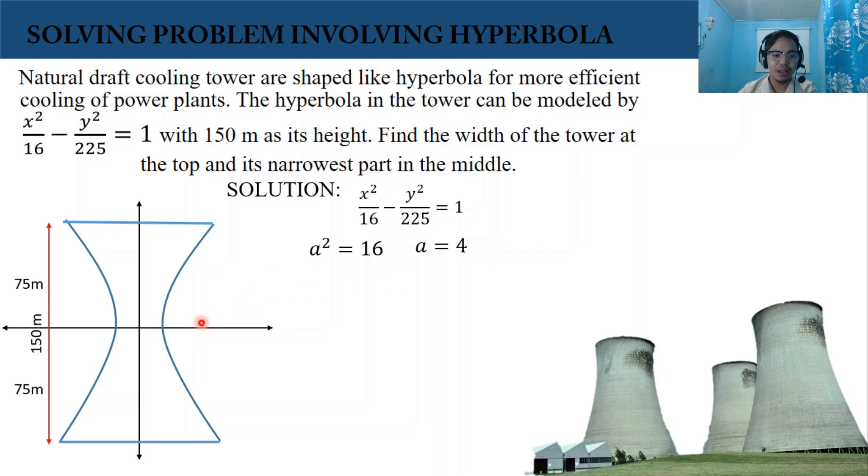Let's label our graph. This is the narrowest part in the middle of our hyperbola. As you notice, the narrowest part of the cooling tower is 2a.